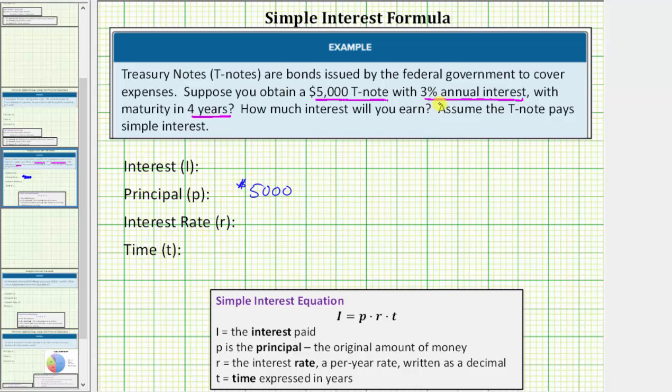The interest rate is 3%, but it must be expressed as a decimal. 3% is equal to 0.03, and the maturity is in four years, so time T is four years.